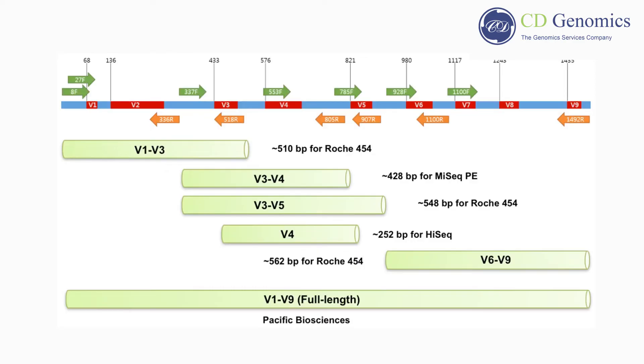Because the V1 to V3 region has been identified as the most useful region for distinguishing among species of the ubiquitous and clinically important skin bacterial genus Staphylococcus, this region is generally used for skin microbiome studies.